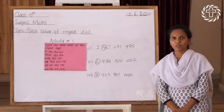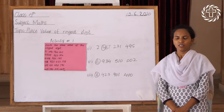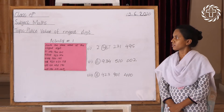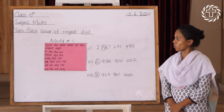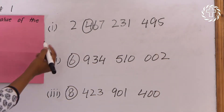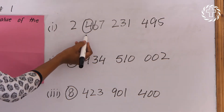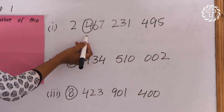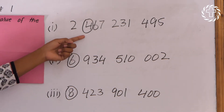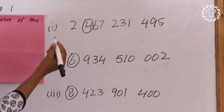Good morning students, how are you? I hope you all are safe and good. Today we will learn how we can write the place value of ringed digits. This is the first number here — the four is the ringed digit. So how can we write the place value of this ringed digit? We will put four as it is, and then we will count the digits on the right side of the ringed digit.